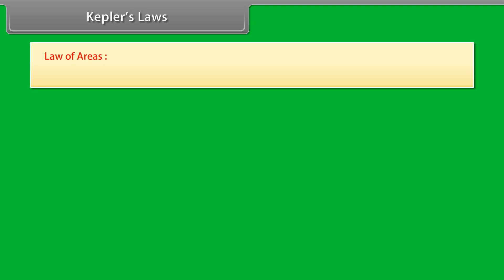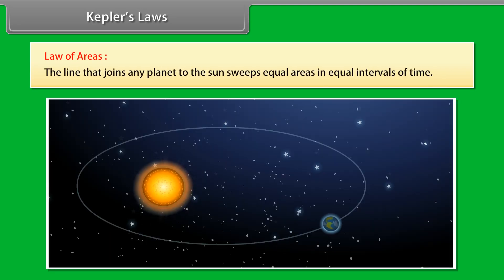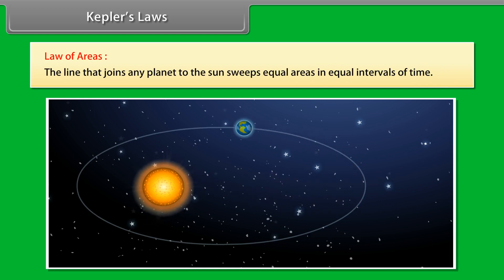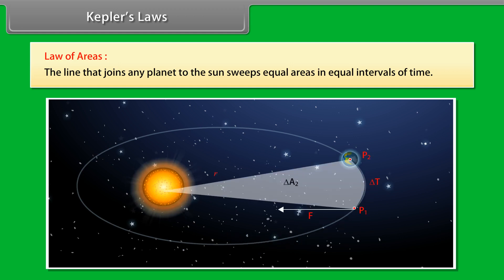Law of Areas: The line that joins any planet to the sun sweeps equal areas in equal intervals of time. This law comes from the observation that planets appear to move slower when they are farther from the sun than when they are nearer.